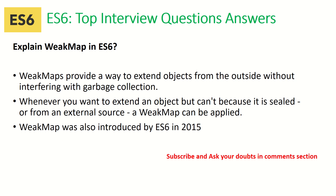The next question is: explain WeakMap. These are important questions that are often asked, so make sure you go through this completely. WeakMap provides a way to extend objects from the outside without interfering with garbage collection. Whenever we want to extend an object but can't because it is sealed or it's from an external source, a WeakMap can be applied. WeakMap is a feature introduced only in ES6.